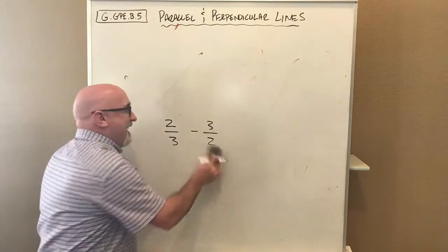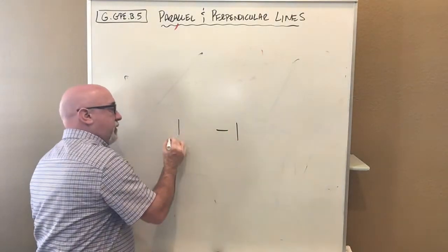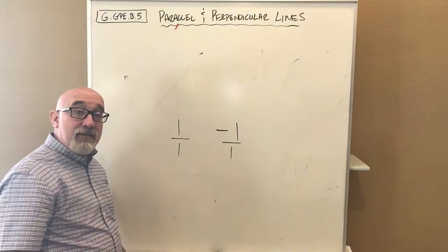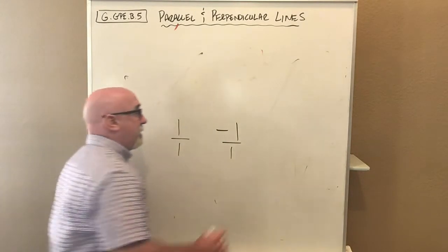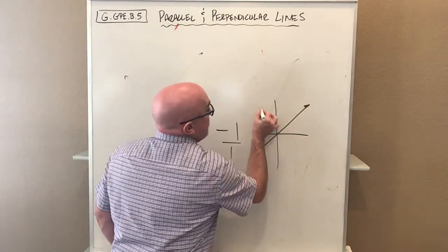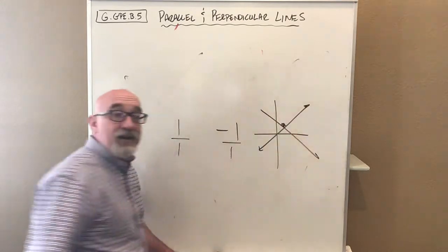One of the tricky ones is this. A slope of 1 and a slope of negative 1. Those are negative reciprocals of each other. They don't necessarily look it, but they are. One would be a slope like this, and the other would be a slope like this. We're ready for the equations now.